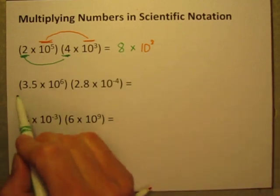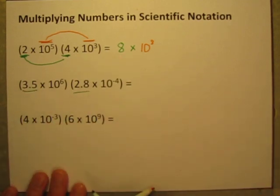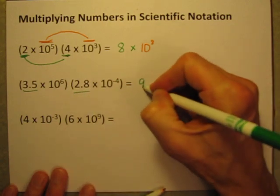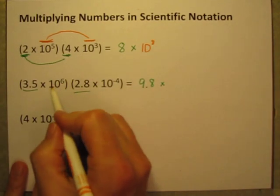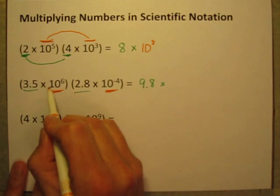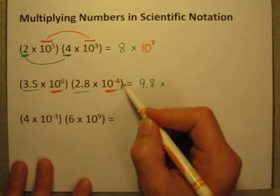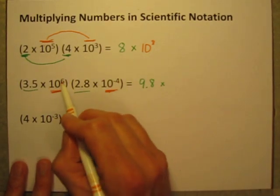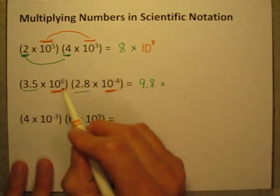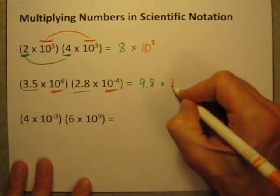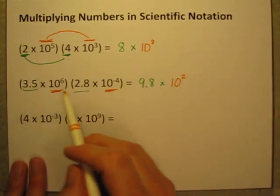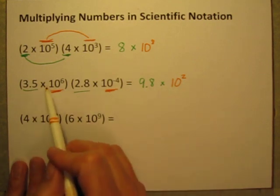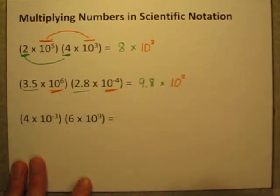If we try it again on another one, let's just multiply the plain old numbers. 3.5 times 2.8 is going to be 9.8 times. Now let's do the powers of 10. 10 to the 6th times 10 to the negative 4th. So what's 6 plus negative 4? 6 plus negative 4 is 2. So this is going to be 10 to the 2nd power. No calculator needed. We're multiplying a really huge number times a really tiny number. No calculator needed.